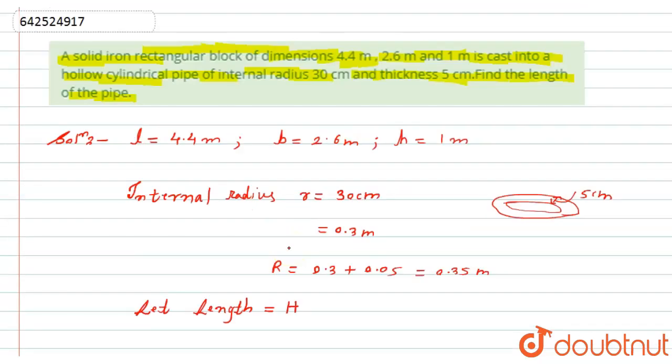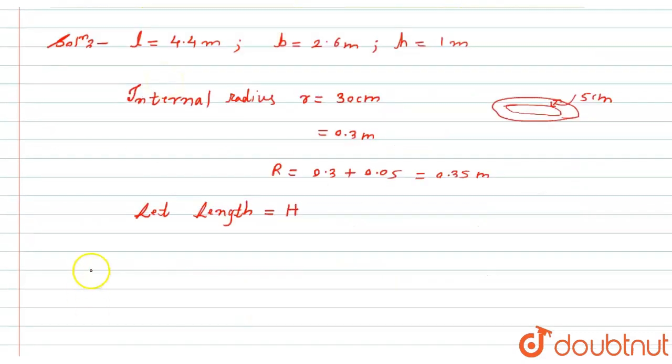Now, if you will look at the sentence, a solid iron rectangular block of dimension 4.4 meter, 2.6 meter, and 1 meter is cast into a cylindrical pipe. It means this rectangular block is melted and from that a cylindrical hollow pipe has been made. So the volume of this rectangular block will be equal to the volume of cylinder.